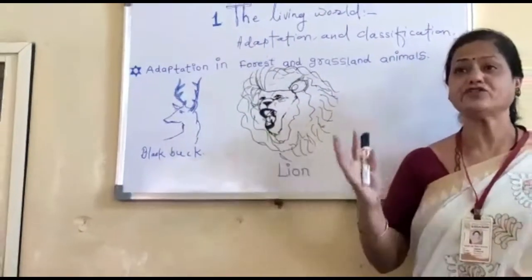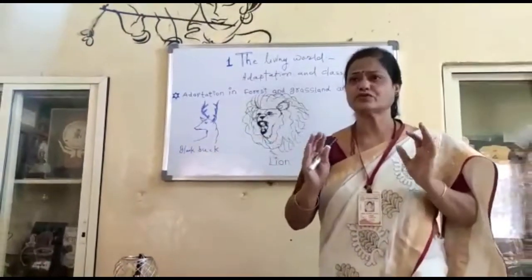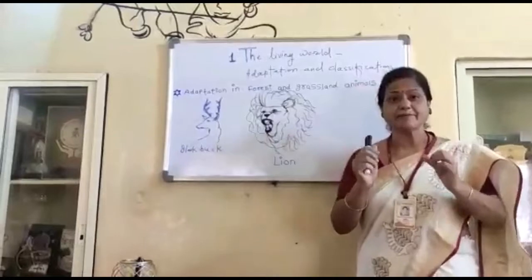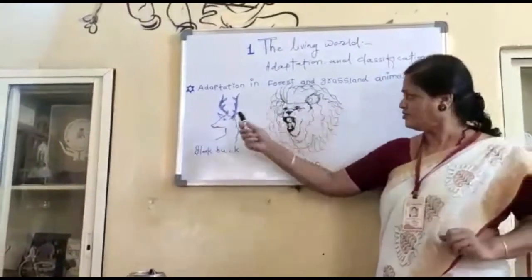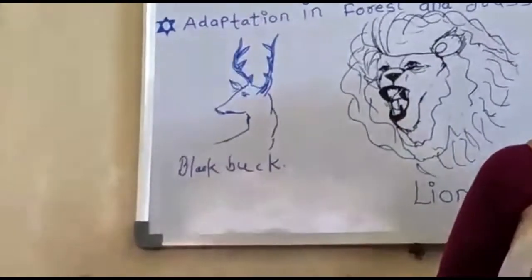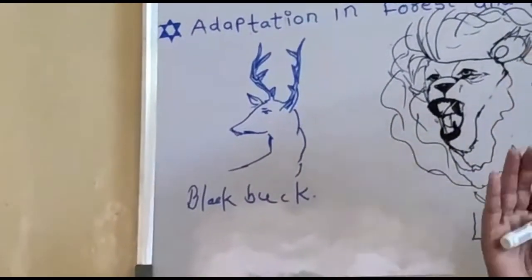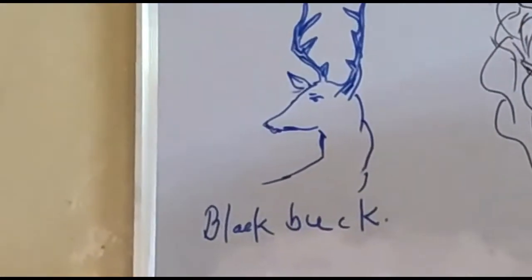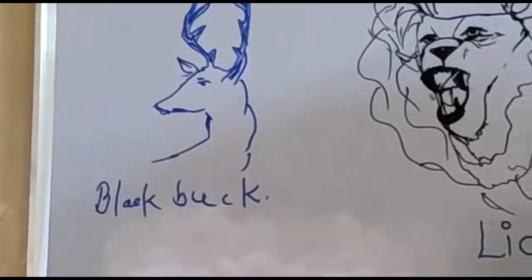Tigers have padded paws. This enables them to silently stalk their prey and capture it easily. The eyes of herbivores are positioned below the forehead or on either side of the head, giving them wide-angle vision which helps protect them from predators.